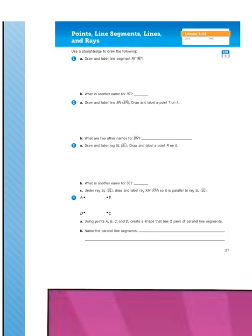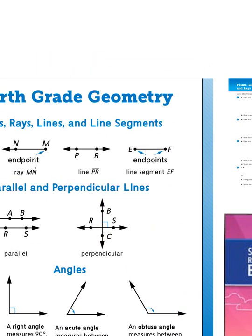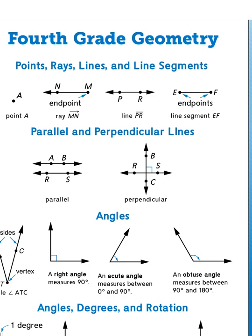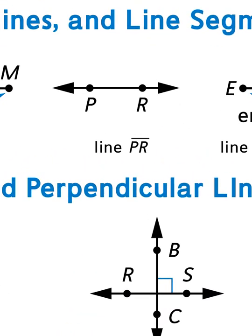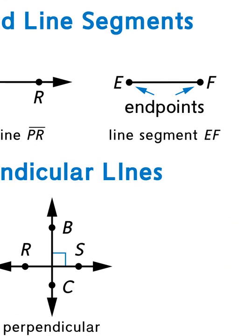The instructions say use a straight edge to draw the following. 1A says draw and label a line segment, and we're going to label it RT. The difference between a line and a line segment is whether it starts or stops. A line like this figure PR technically could go on forever, whereas a line segment has definite endpoints. The endpoints means that it ends at some point here and here. So line segment EF starts at E or ends in E, ends in F or starts with F. Line segments have a beginning and end point.